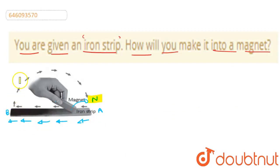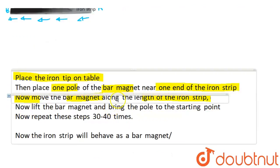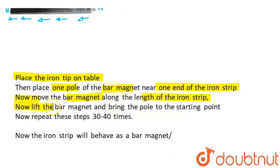After that, we will lift it. After that, we will return to the point where we started. So, now lift the bar magnet and bring the pole back to the starting point. And repeat these steps 30-40 times.